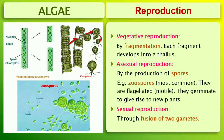Vegetative reproduction is by fragmentation; each fragment develops into a thallus. Asexual reproduction is by the production of different types of spores, the most common being the zoospores. They are flagellated and motile, and on germination give rise to new plants.